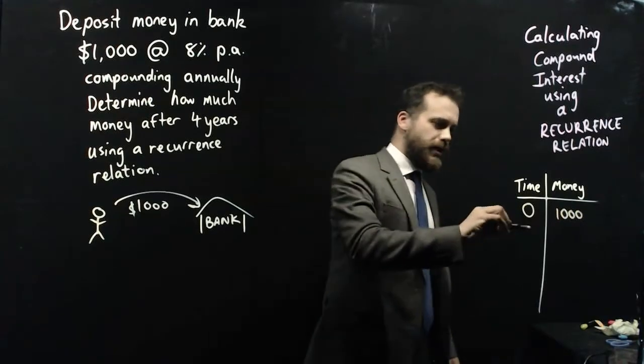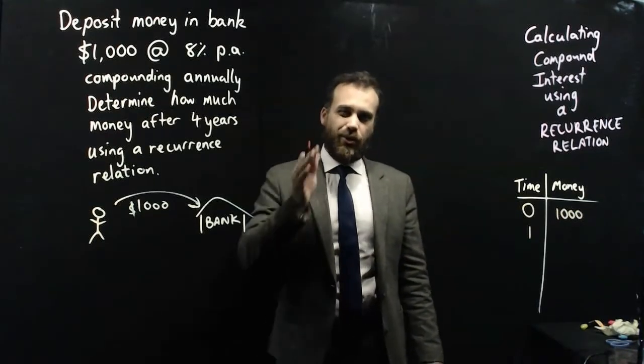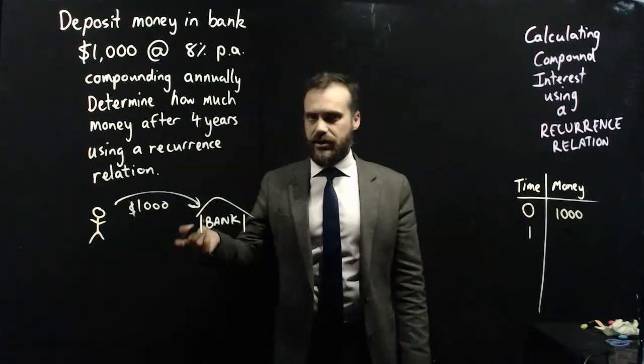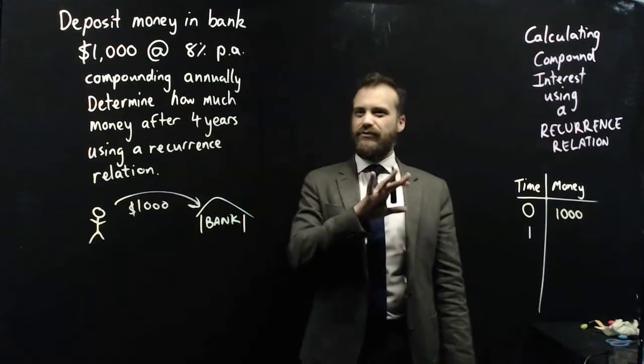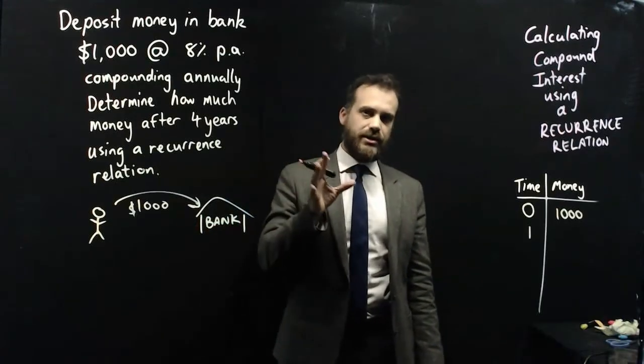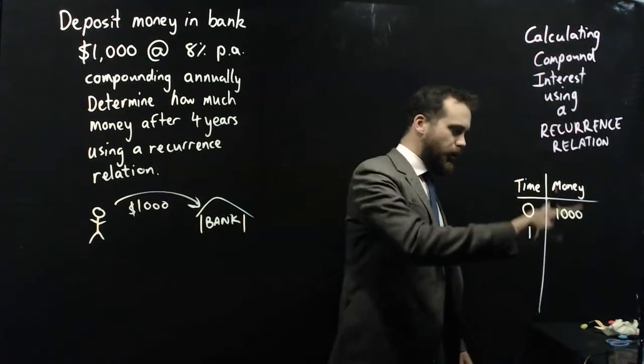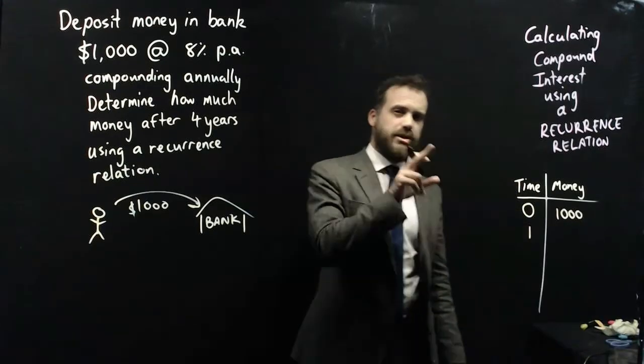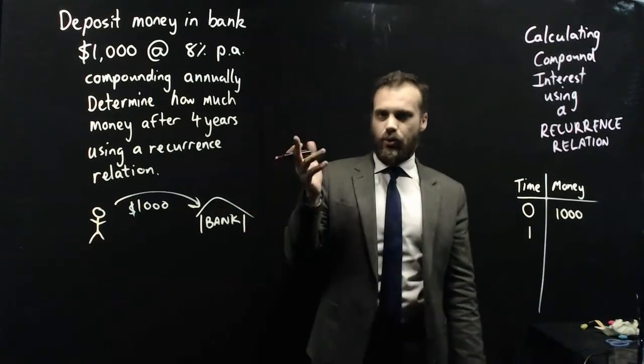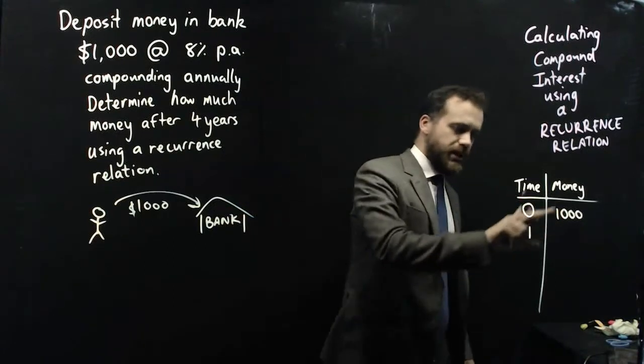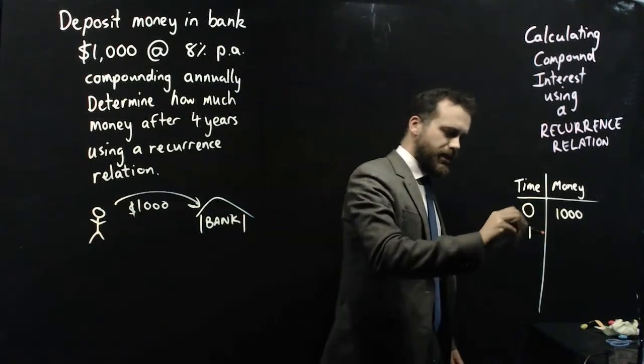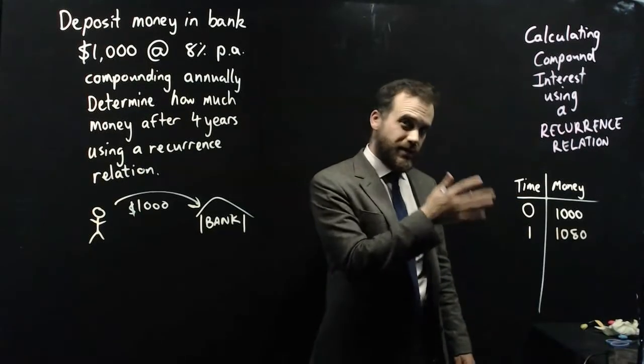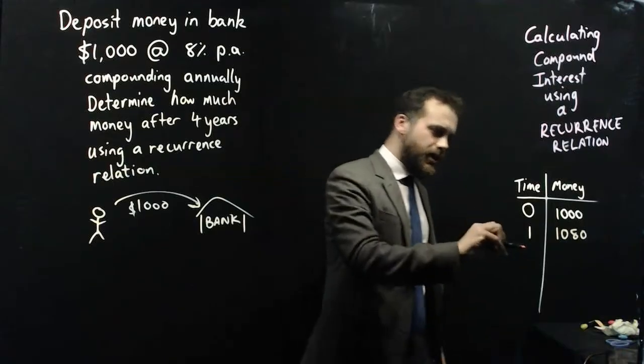At time one, after one year, we're going to have $1,000 plus 8% of $1,000. The fastest way to do that is to multiply 1,000 by 1.08. The 0.08 is the 8%, 1 is the beginning of that. So after this, I'm going to have 1,000 times 1.08, which is $1,080.